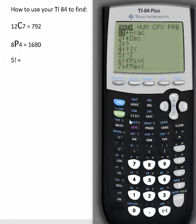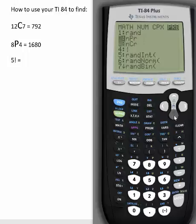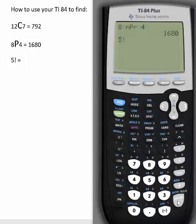We put 5 on the home screen. You go to math, PRB. Choose number 4. Enter. And then enter. It's 120.